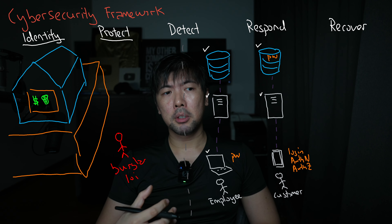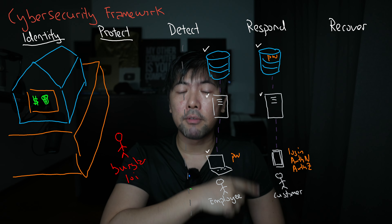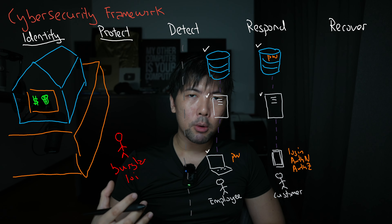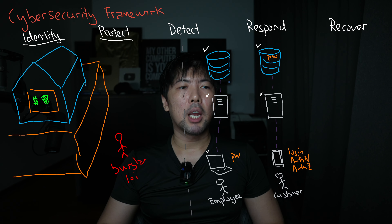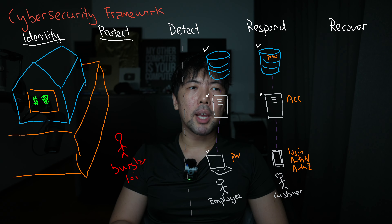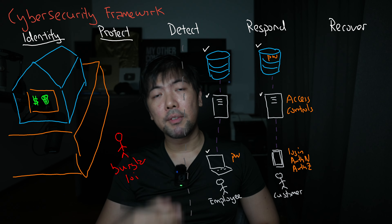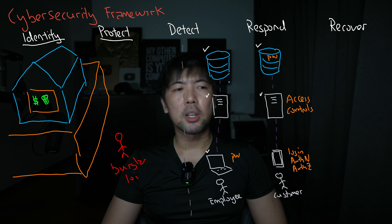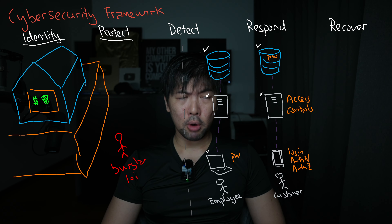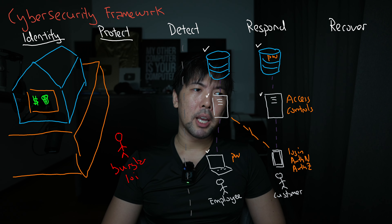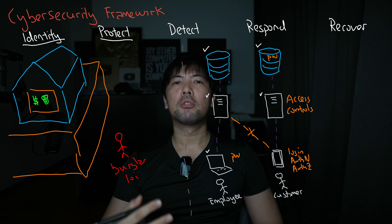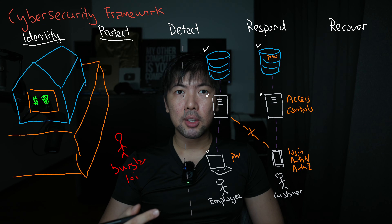Authorization means that once you've proven who you are, you determine what you're allowed to do. For example, you can view your own profile information, but you are not authorized to view someone else's. Additional access controls can be put in place — such as requiring a certificate or verification to access specific servers — so that, for instance, a customer cannot access an internal employee system.